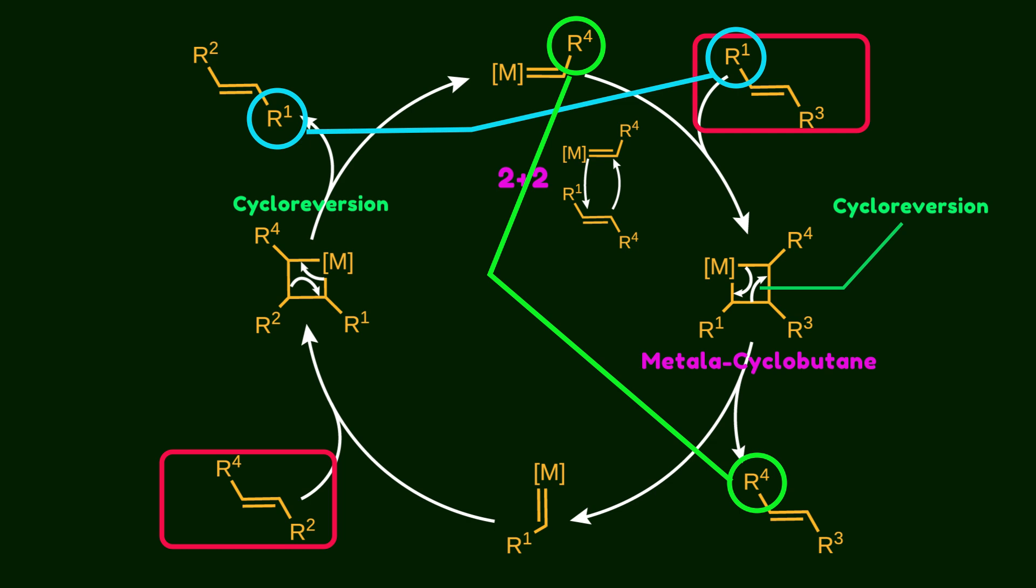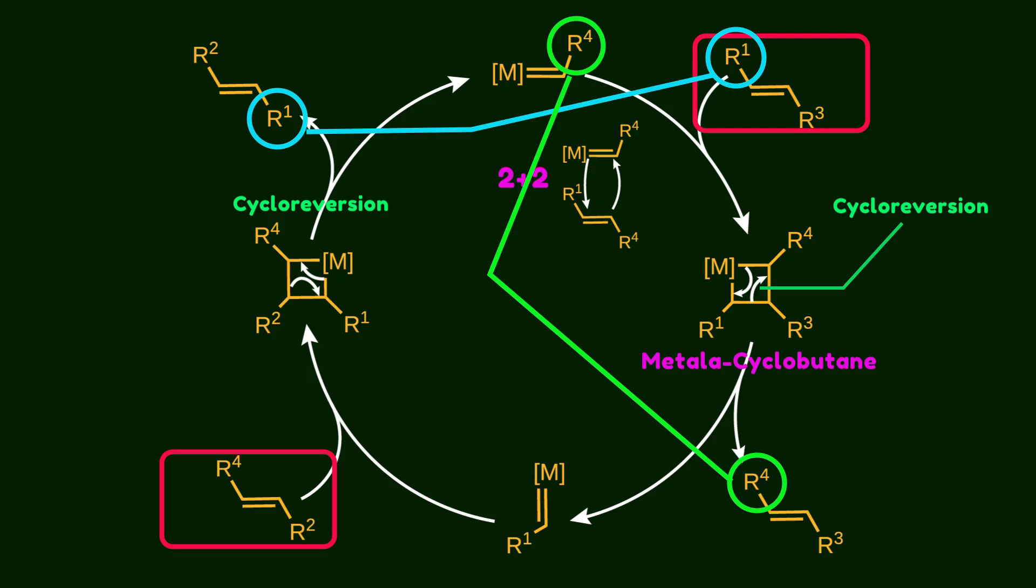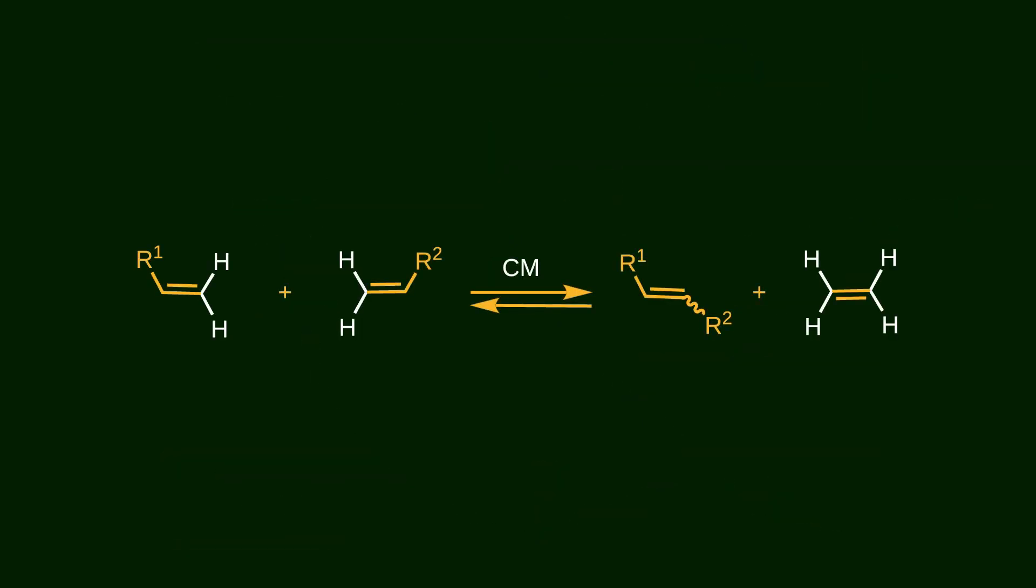Notice that all steps in this catalytic cycle are reversible. To increase the rate of the forward reaction, we can use two terminal alkenes. In this setup, ethylene gas is formed as one of the products, and since it's a gas, it can be removed from the system. This helps drive the equilibrium toward the product side.